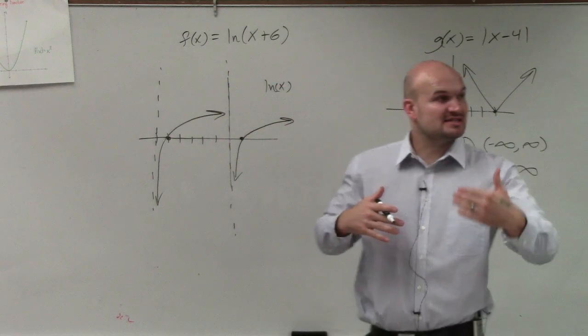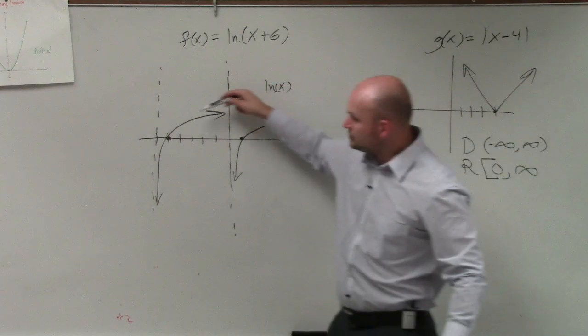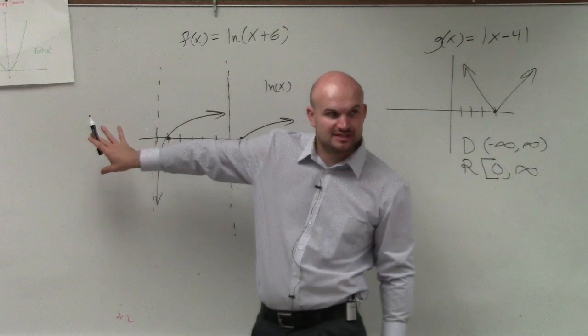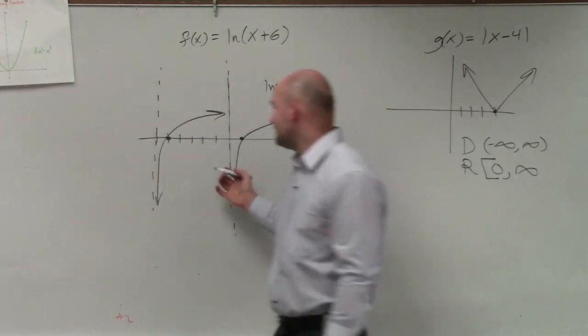The graph doesn't cross this vertical asymptote—it approaches that vertical asymptote. So when you have your original parent graph, you're shifting the whole thing six units to the left. So when we identify our domain,